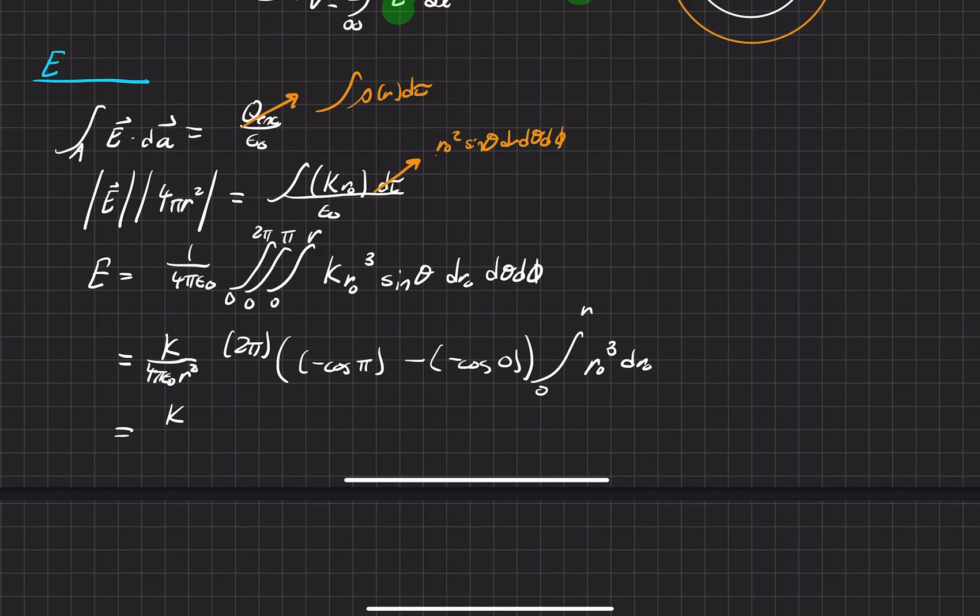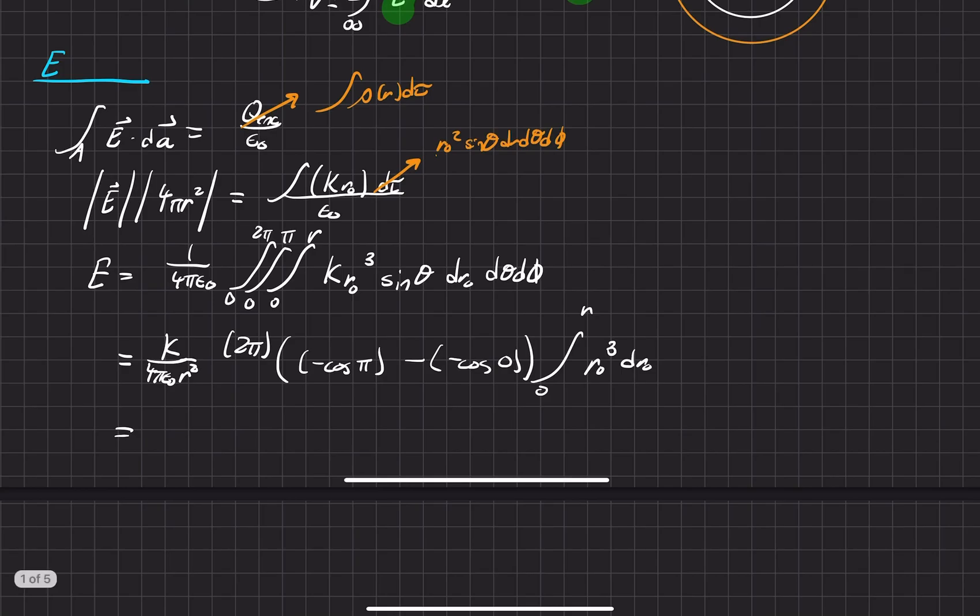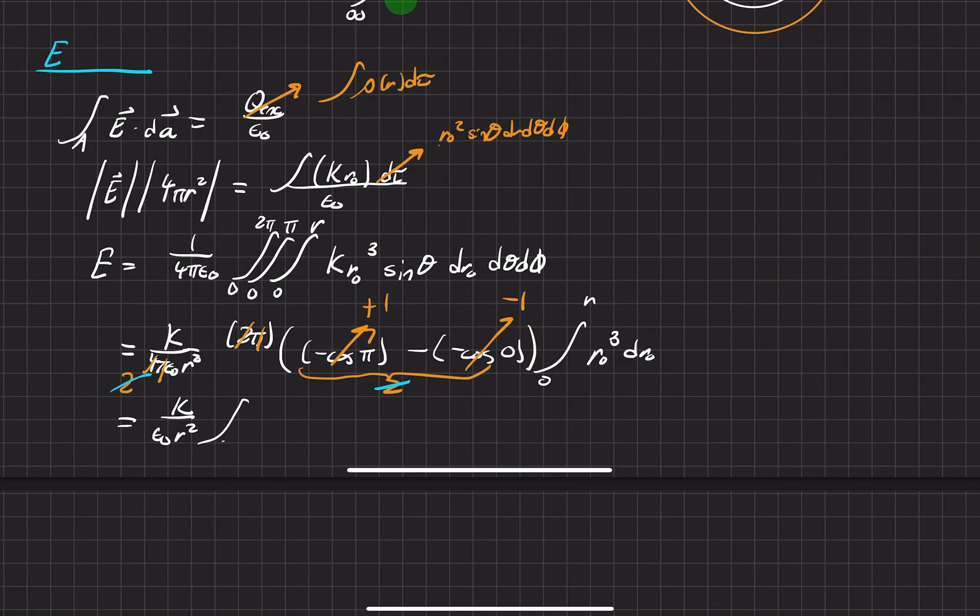And now we just have our theta integral, which is a negative cosine evaluated at pi minus a negative cosine evaluated at 0 in parentheses. And then we have our r integral. I'm just doing some house cleaning right now. Let me go ahead and cancel things out. This 2 turns into a 2 right here. This pi goes away. We have a pi right here. And then this is actually a plus 1. This is actually a minus 1. So that ends up being a 2. So those will cancel out here. And then what's left is a k over epsilon naught r squared. And then that integral for our r, which I'm just going to leave for the very end.